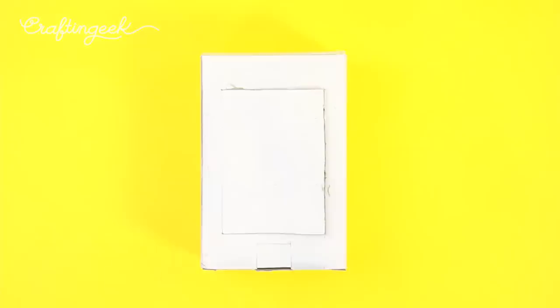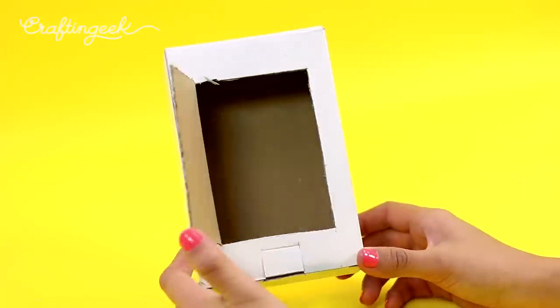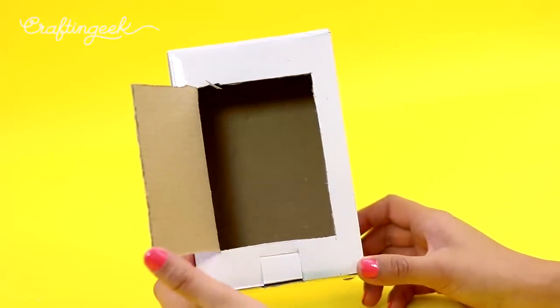So that we're able to open it like this. With the help of our ruler we're going to open it to the left side so it can open up correctly. This is the base of our safe box.